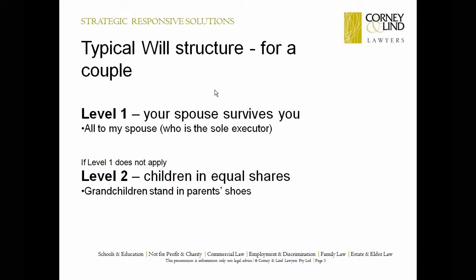Then we normally in a typical will deal with what happens if both of the people to the relationship have passed away — what happens to the estate. We typically talk about that as Level 2. And if there are children to the relationship, usually the children would take an equal share as the net benefit of the estate, with a gift over to grandchildren so that they stand in their parents' shoes. So that's what a typical will structure would look like.